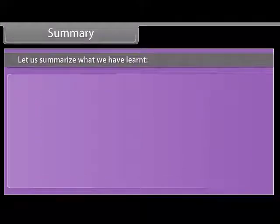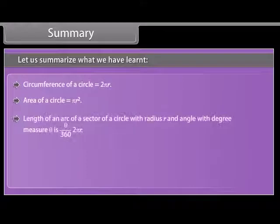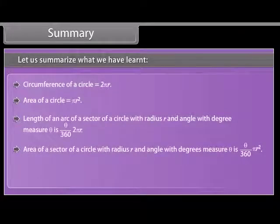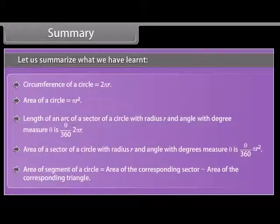Let us summarize what we have learned. Circumference of a circle = 2πr. Area of a circle = πr². Length of an arc of a sector with radius r and angle θ (in degrees) = (θ/360) × 2πr. Area of a sector with radius r and angle θ = (θ/360) × πr². Area of a segment = area of the corresponding sector minus area of the corresponding triangle.